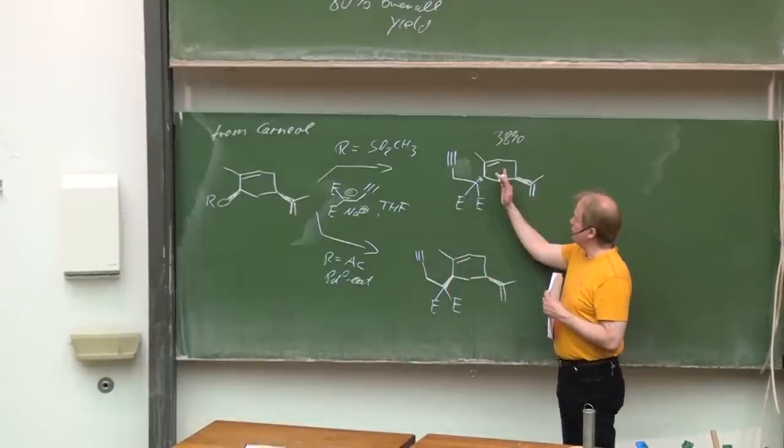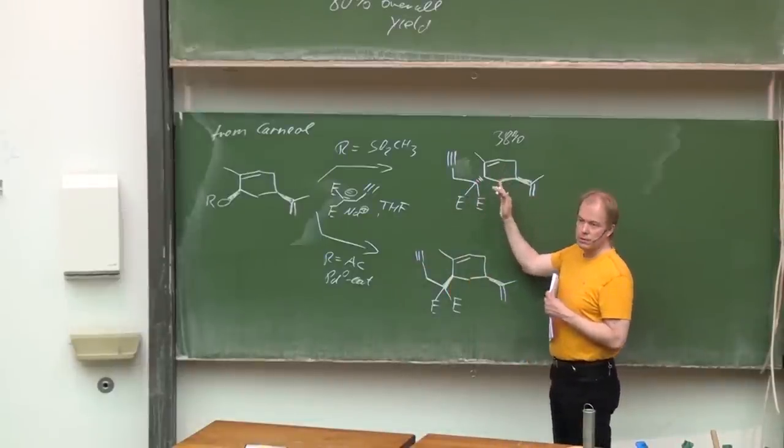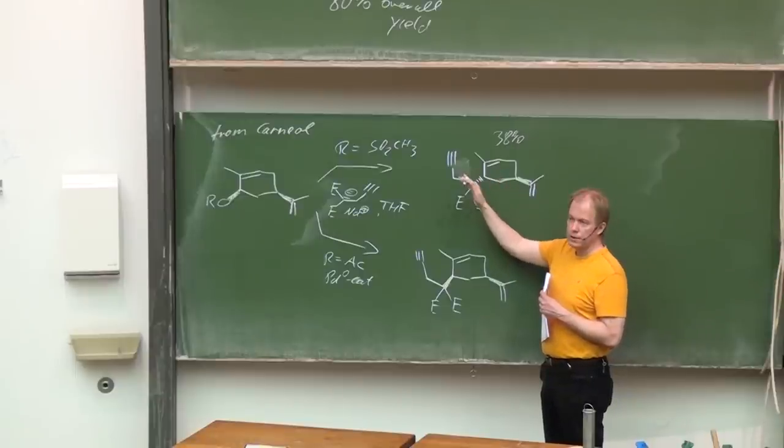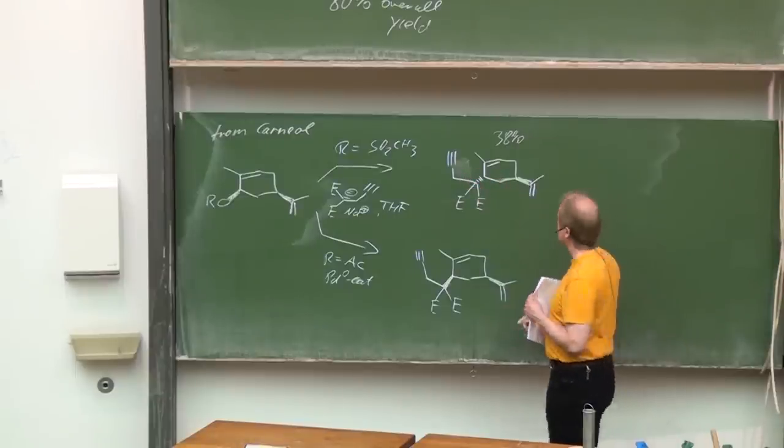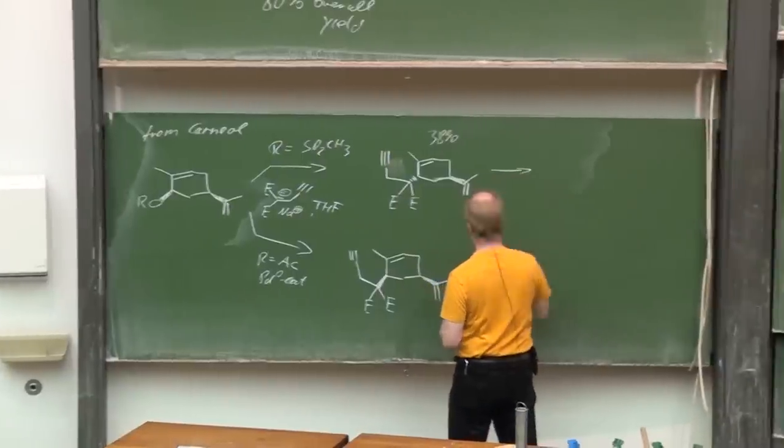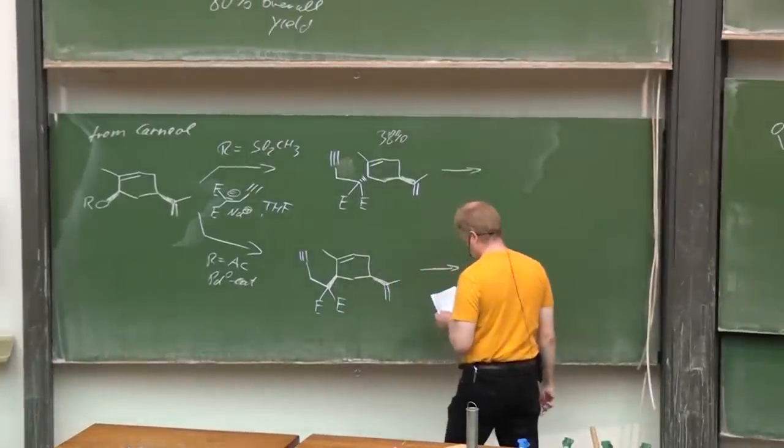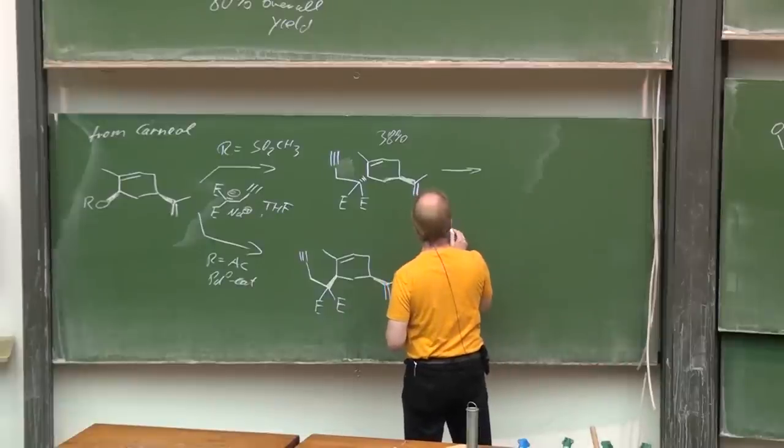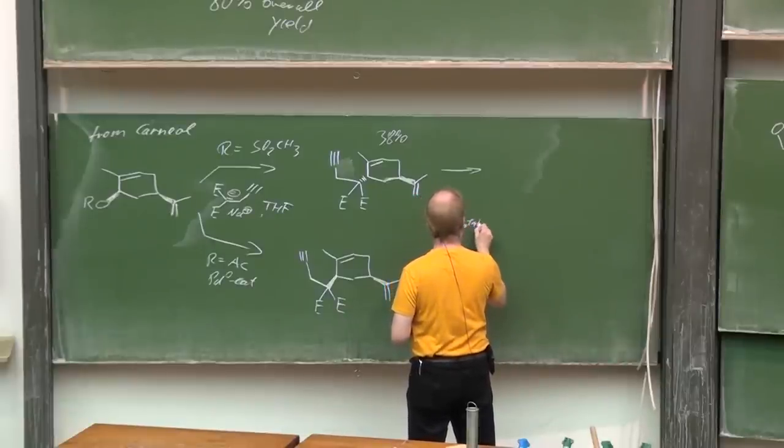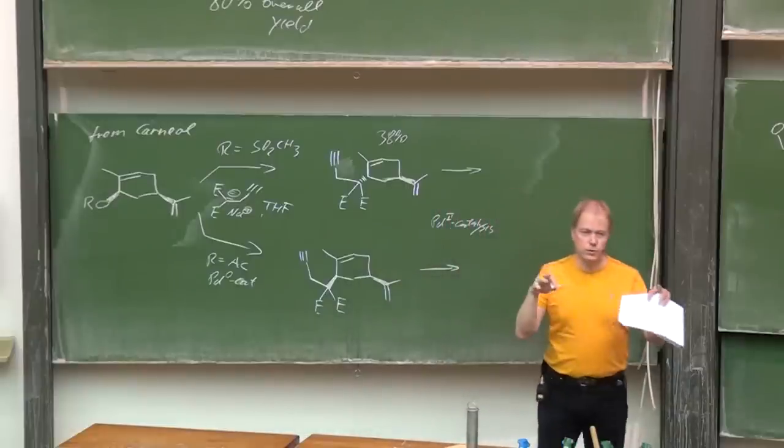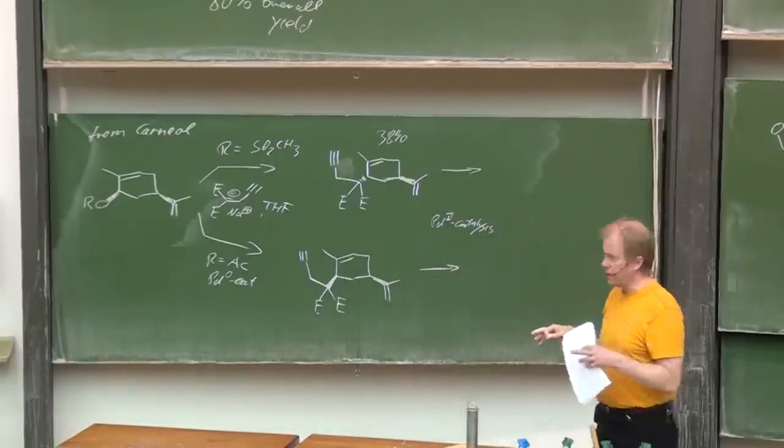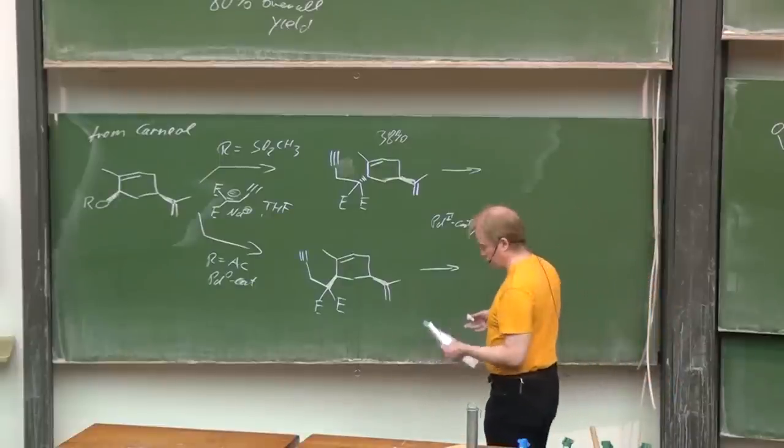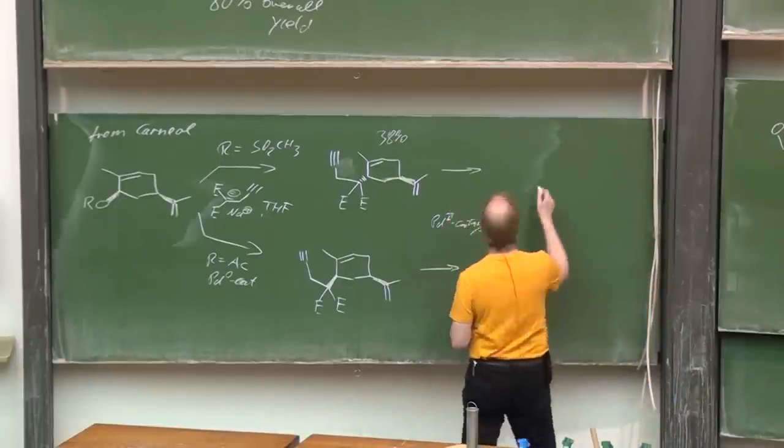Now we have set up a system with an enyne and an ene functionality ready for the enyne cyclization. So palladium(II) catalysis, or palladium(0) plus acetic acid—that's essentially then also palladium(II) catalysis.